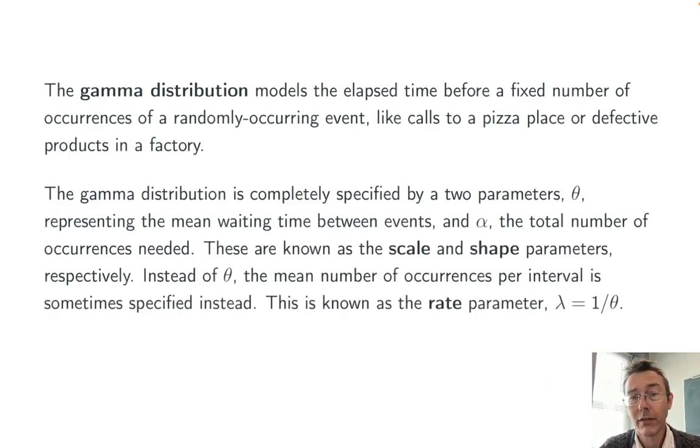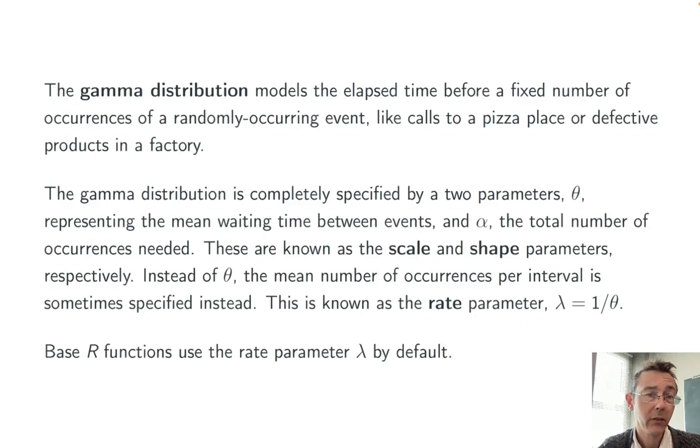Sometimes instead of that scale parameter, we specify the average number of occurrences per unit time, known as the rate parameter lambda. Lambda is equal to one over theta. You specify one, the other is specified for you. By default, base R functions use the rate parameter lambda. If you want to specify the scale parameter theta instead, you have to explicitly say so, and I'll show an example of that in just a minute.